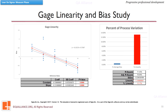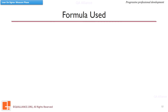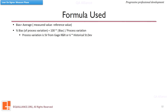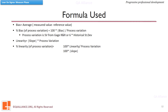Sigma XL provides sample data and example data for all the functions — you may have a look in the help section of Sigma XL. Bias is calculated by taking the average of all values coming as a difference between the measured value and reference value. Percentage bias is calculated as the modulus of bias divided by process variation, multiplied by 100. Linearity is calculated by multiplying slope with process variation, and percentage linearity can be calculated by multiplying 100 by the modulus of slope.